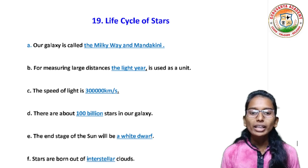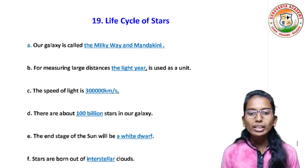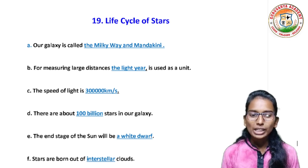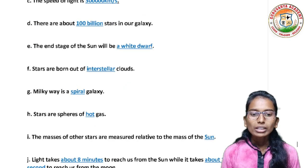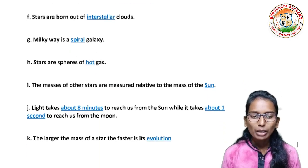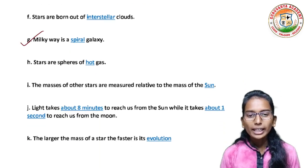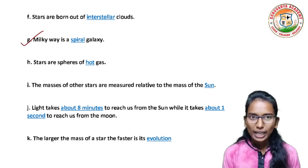The speed of light is 3 into 10 raised to power 5 meters per second. There are about 100 billion stars in our galaxy. The end stage of the sun will be a white dwarf. Stars are born out of interstellar clouds. Milky Way is a spiral galaxy.